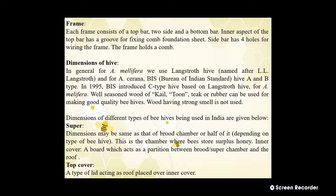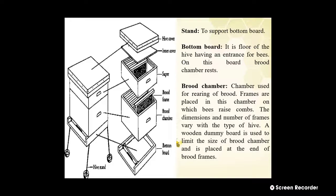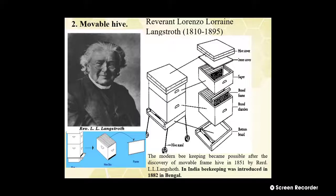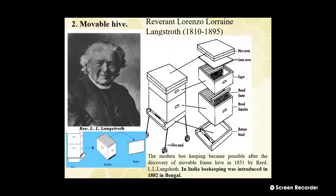The super's dimensions may be the same as that of the brood chamber or half of it, depending on the type of bee hive. This is the chamber where bees store surplus honey. The inner cover is a board that acts as a partition between the brood or super chamber and the roof. The top cover is a type of lid acting as a roof, placed over the inner cover. This completes the structure of the moveable frame hive.